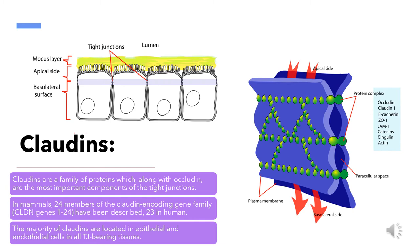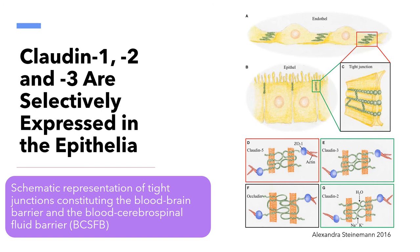Claudins usually form a monolayer of cells that divide two compartments. Claudin-5 is the most abundant at the blood-brain barrier, as its expression level is hundreds of times higher than other claudins confirmed in the brain, including claudin-1, 2 and 3. Claudins are selectively expressed in the epithelia.